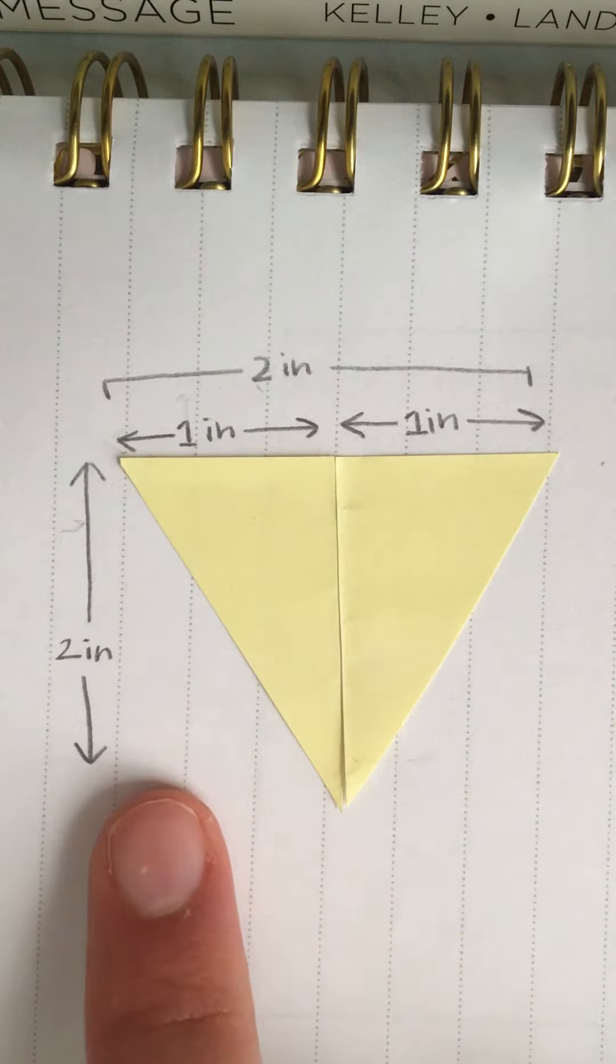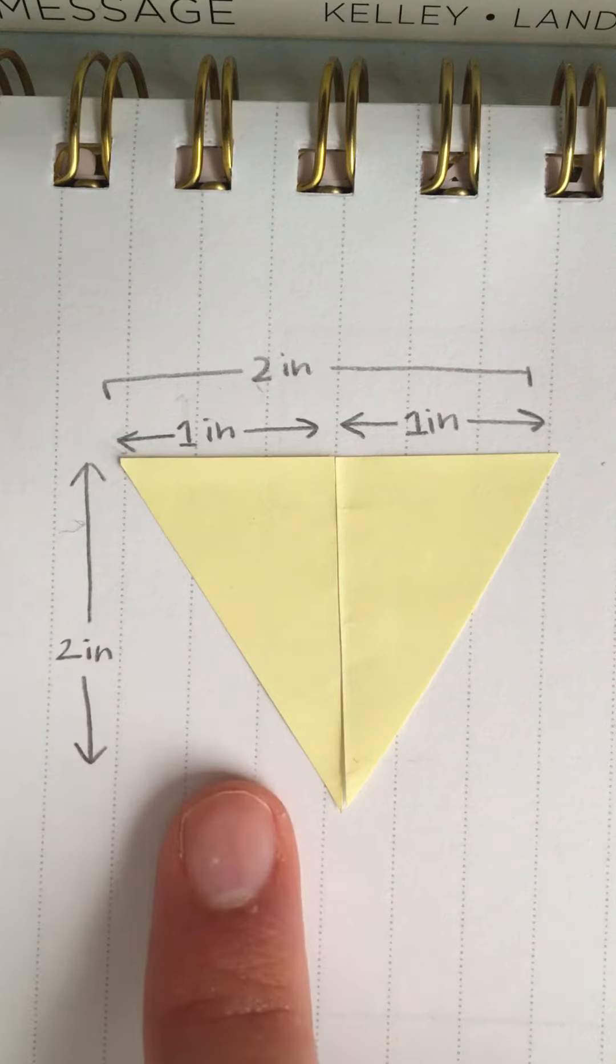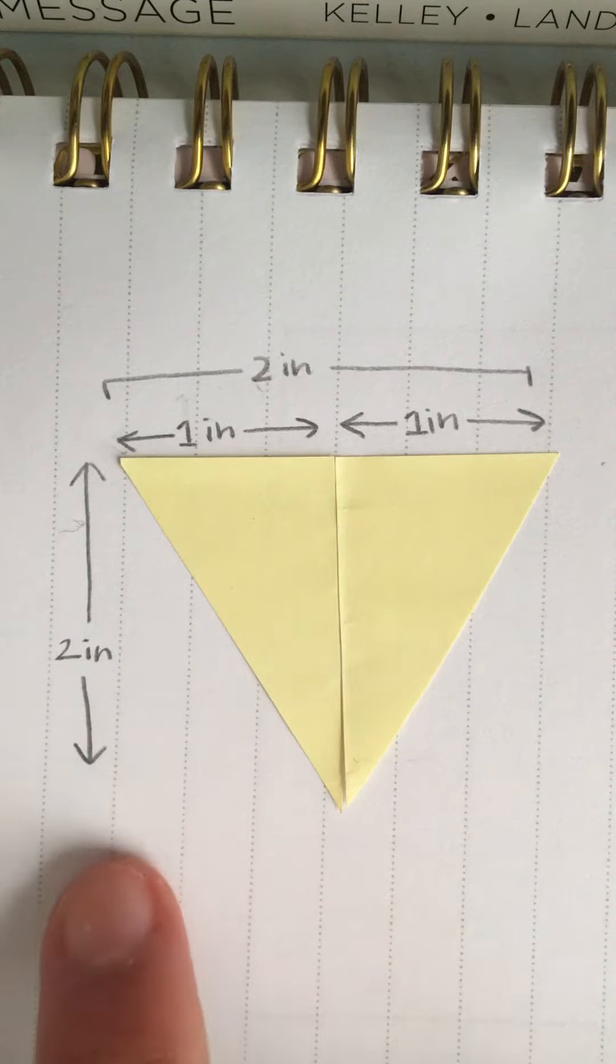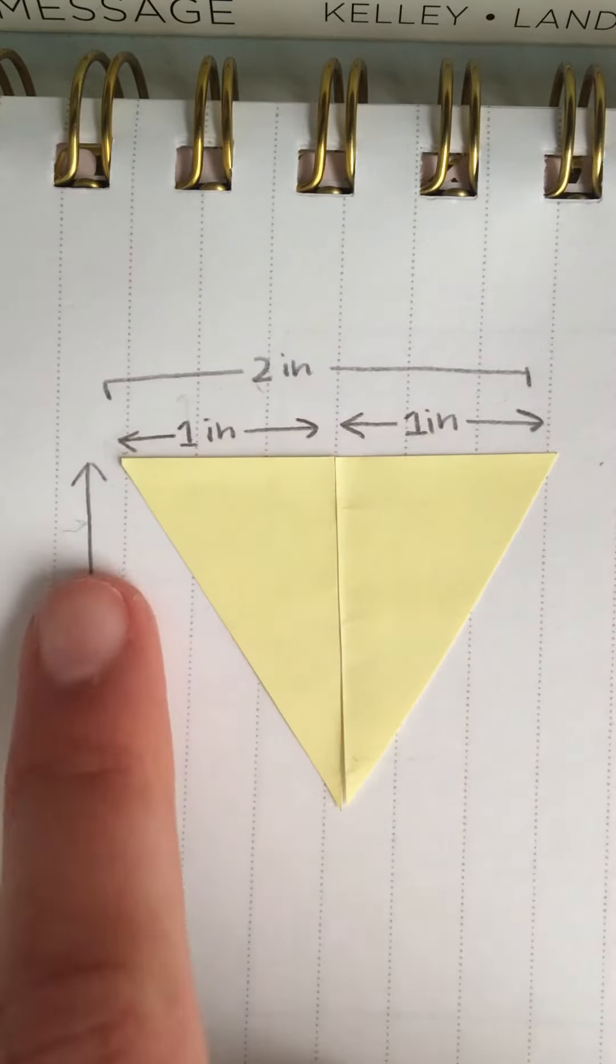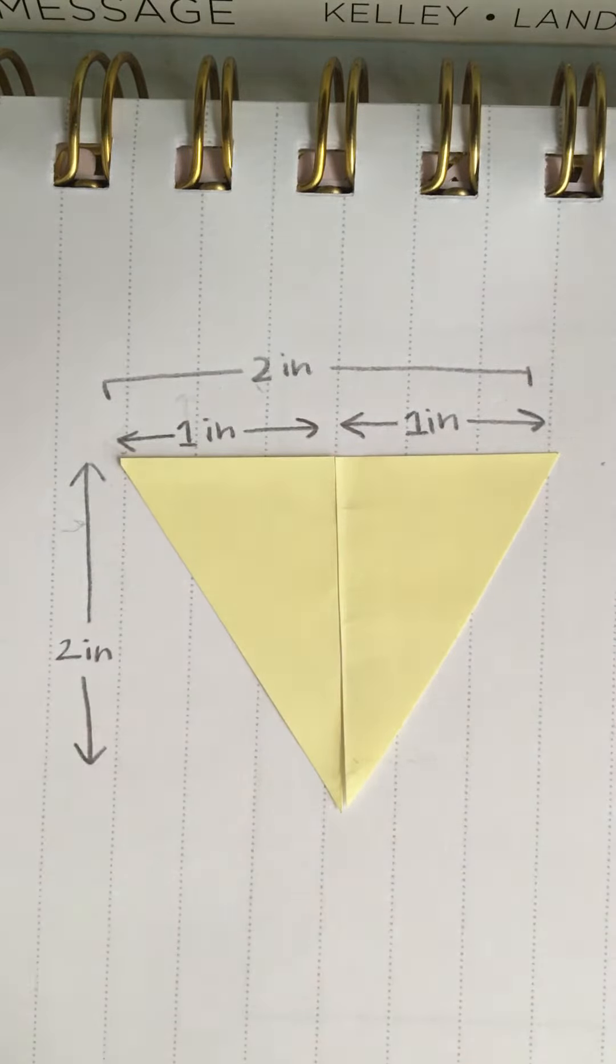I know that with rectangles I can multiply my width by my height to get the total area, but it's a little more tricky with triangles and I don't know how to find the area of a triangle.